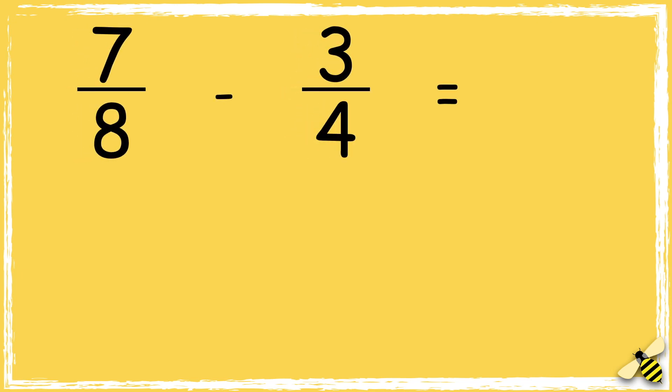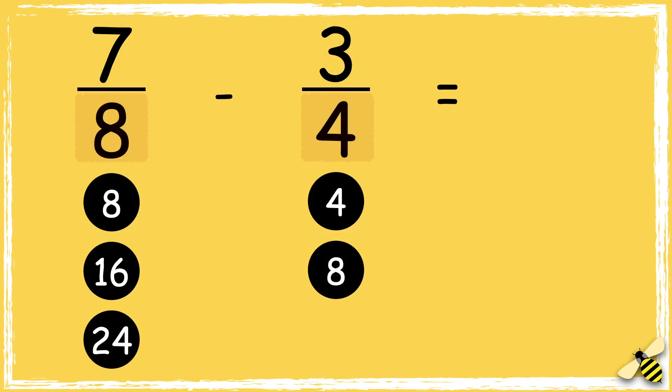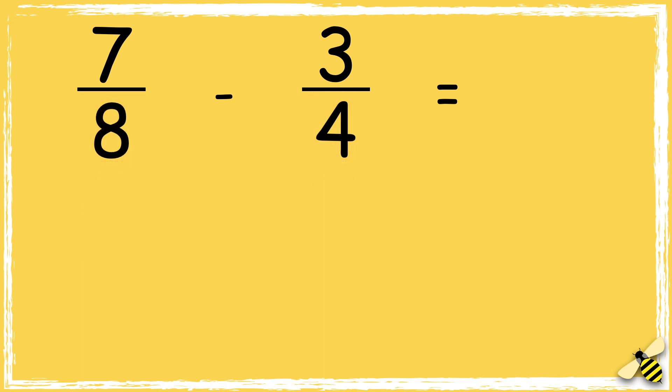Let's have a look at another example: 7/8 take away 3/4. We need to find a common denominator, so let's look at the multiples of 8 and 4. I can see that 8 is the lowest common multiple, so I can make both the denominators 8. As 7/8 already has 8 as its denominator, we don't need to change this fraction.